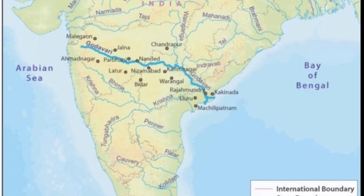Next is the Godavari Basin. The Godavari River originates from the slopes of the Western Ghats in the Nasik district of Maharashtra. Its length is about 1500 km. It is also known as Dakshin Ganga. It flows through the states of Madhya Pradesh, Odisha, and Andhra Pradesh.